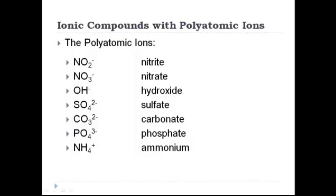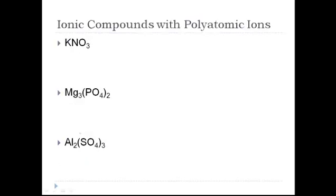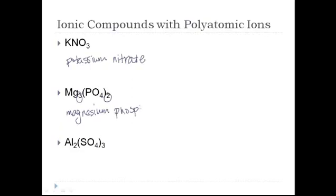Now let's take another look at compounds with polyatomic ions. Here's the list again — you should memorize it. KNO₃: K is potassium, and NO₃ is nitrate. You just write down the name of the element and then the polyatomic ion — really simple. Mg₃(PO₄)₂: don't worry about the subscripts. Mg is magnesium, and PO₄ is phosphate, so we have magnesium phosphate. And Al₂(SO₄)₃: Al is aluminum — it doesn't matter that there are two of them — and SO₄ is sulfate.